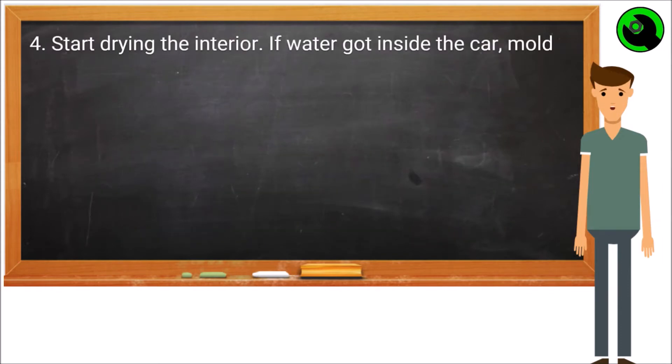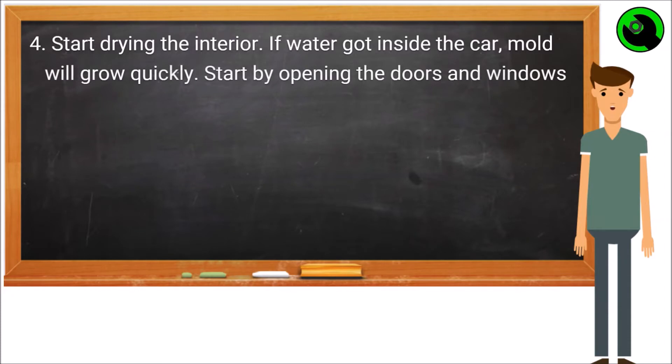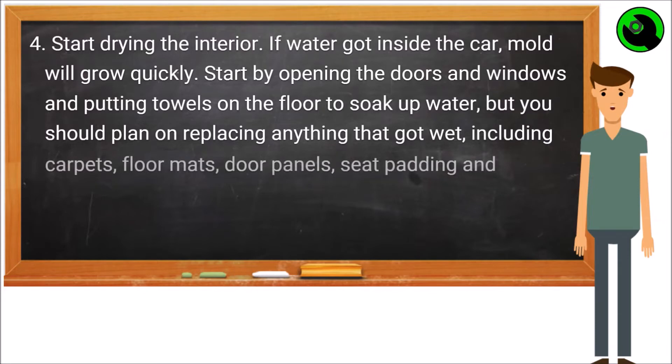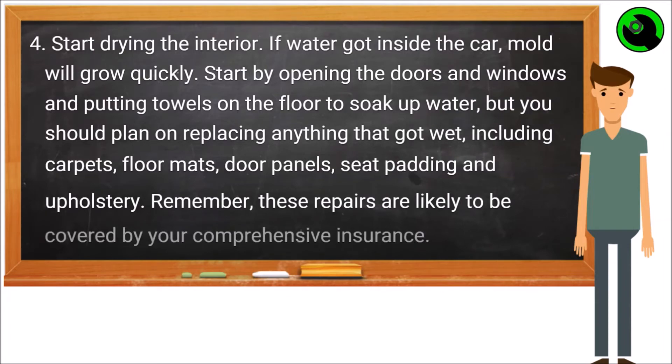Step 4: Start drying the interior. If water got inside the car, mold will grow quickly. Start by opening the doors and windows and putting towels on the floor to soak up water, but you should plan on replacing anything that got wet, including carpets, floor mats, door panels, seat padding and upholstery. Remember, these repairs are likely to be covered by your comprehensive insurance.